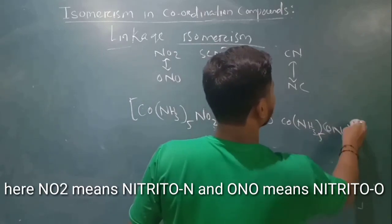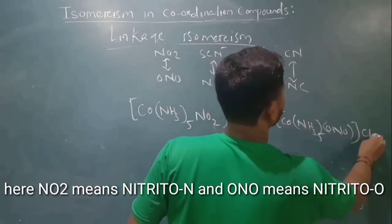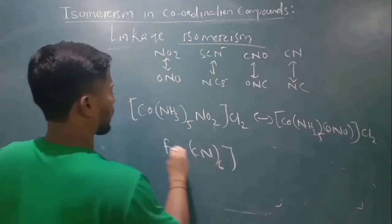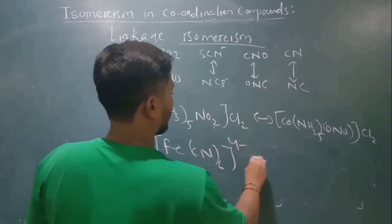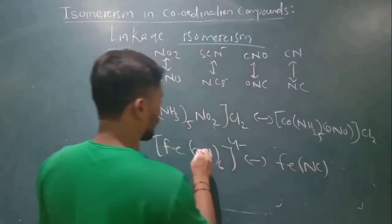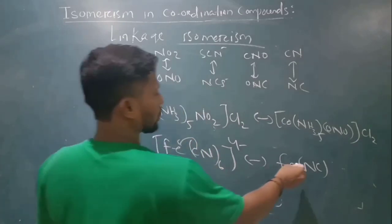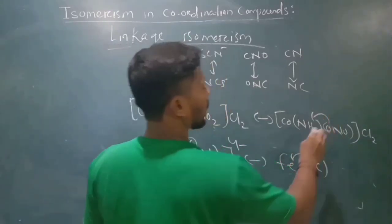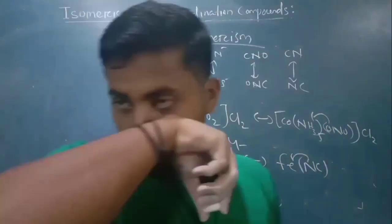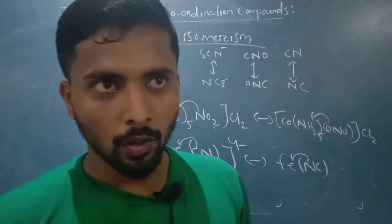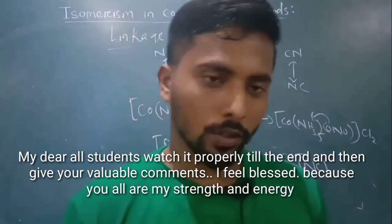Another example is [Co(NH3)5(ONO)]Cl2 where ONO donates through oxygen. With CN ligands, if C side donates it's one form, if N side donates it's another. The same with O side - the attachment differs at a particular instant.